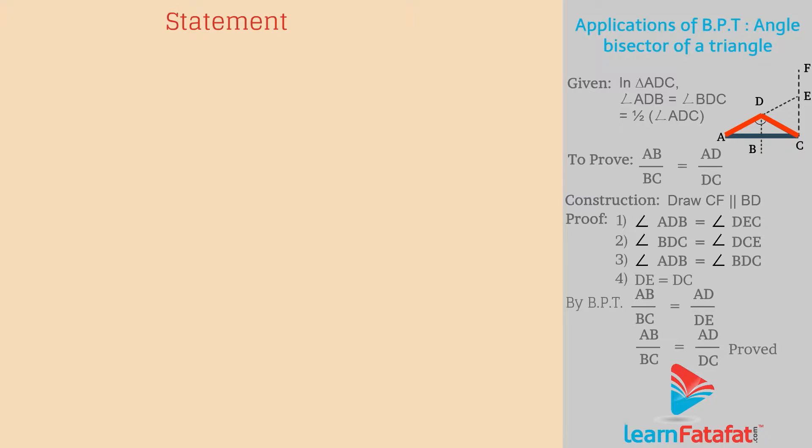Statement: The angle bisector of a triangle divides the opposite side of an angle in the ratio of remaining sides.